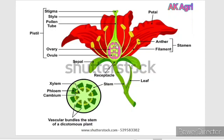Within the ovary, there are bead-like structures called as ovule. After pollination and fertilization, these ovules will develop into seed and the ovary will form into fruit.